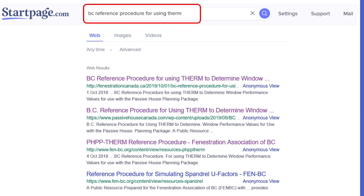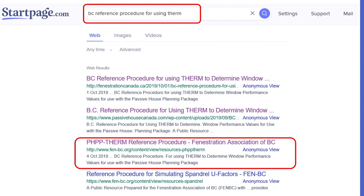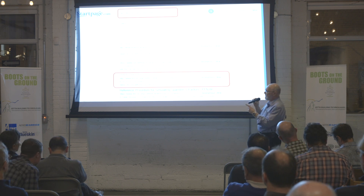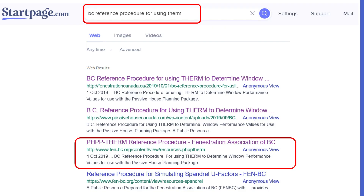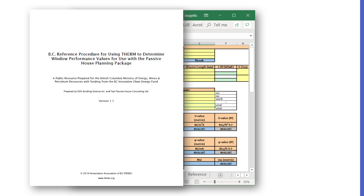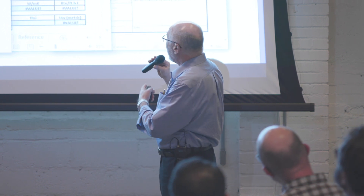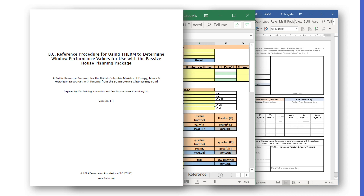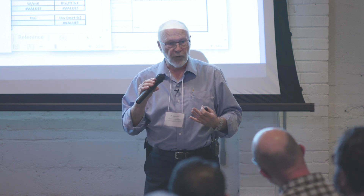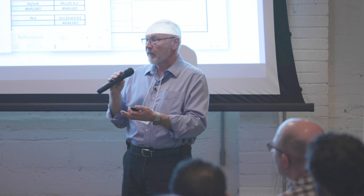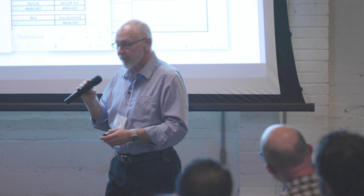I like to use startpage.com because it anonymizes your searching while using the Google search engine. If you go to fenbc.org, it takes you to a page where you can download the entire package, which includes a PDF file documenting the reference procedure, a set of Excel worksheets that Peel Passive House prepared to help complete the computations using data from Therm and window files, and a reporting template. Reports prepared with this methodology will have a standard content format, with reporting requirements and a standard template, making them easily recognizable as valid demonstrations of a product's PHPP metrics.